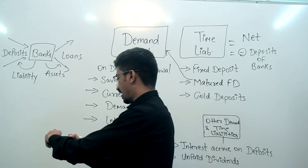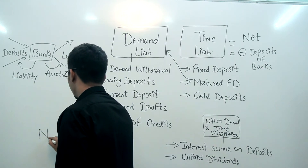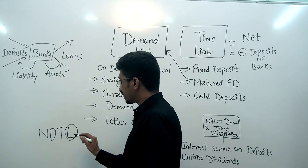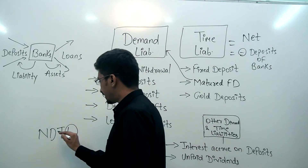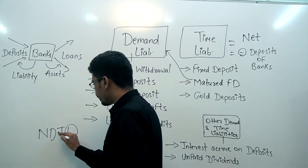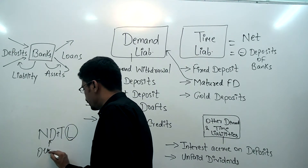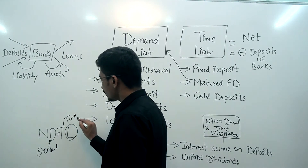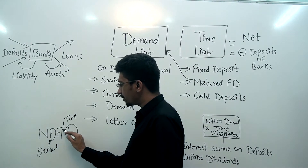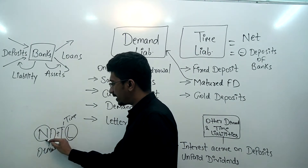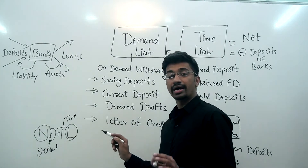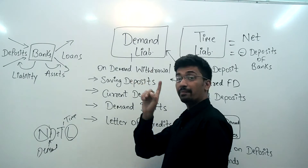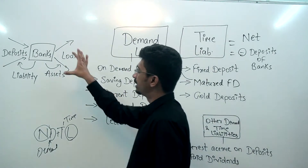इस video में हमारा मुद्दा सिर्फ है NDTL — Net Demand Time Liability को समझना। जैसा कि नाम अपने आप में समझा रहा है, NDTL एक तरीके की liability है। यह दो तरीके की liability है — एक D यानी Demand, और एक T यानी Time। और इसके आगे एक word है N जिसका मतलब है Net। इन सारे words को यहाँ elaborately discuss करेंगे।